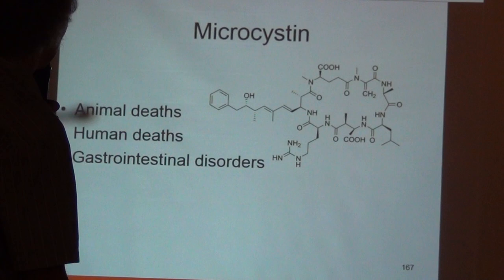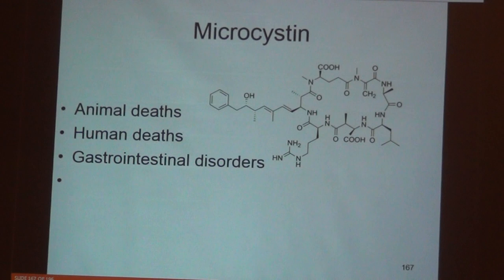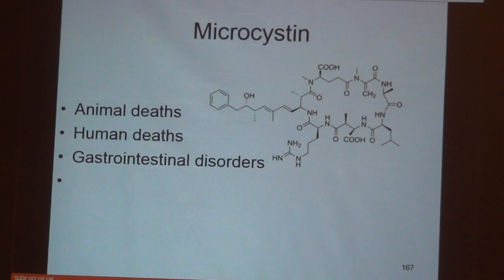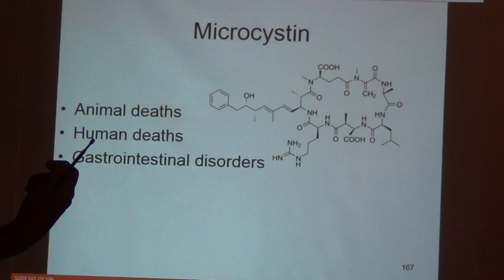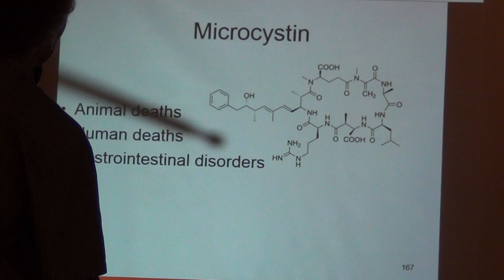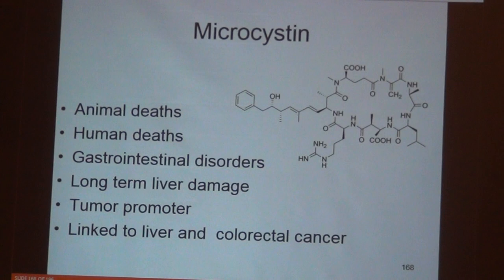Focusing on microcystin: it's known to kill animals and humans, and leads to short-term gastrointestinal disorders. It was actually discovered over a hundred years ago in Australia when a bunch of sheep died. They found the sheep were drinking from a pond with a big bloom of green algae, and scientists discovered this molecule. Once you start studying that toxin and what it does biochemically, you discover it also leads to long-term liver damage. It's a tumor promoter and can lead to things like liver cancer.